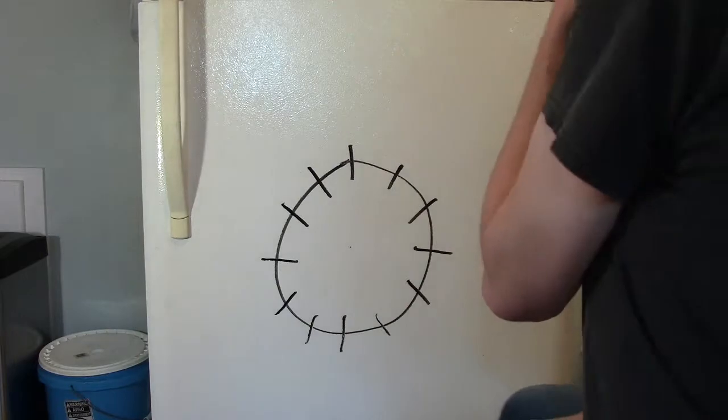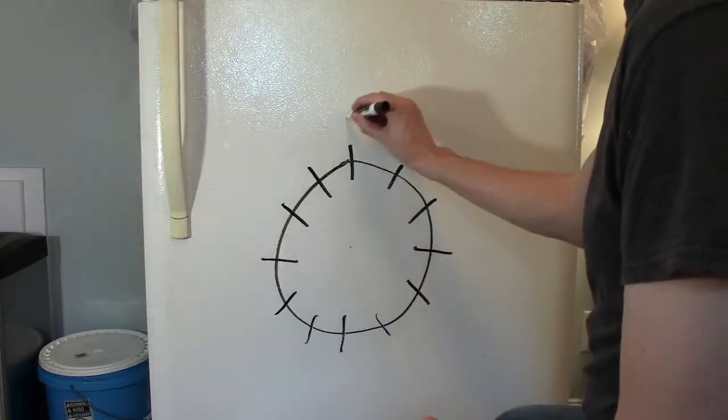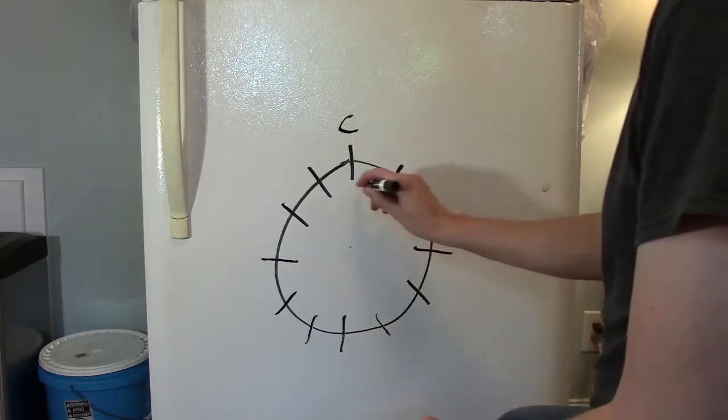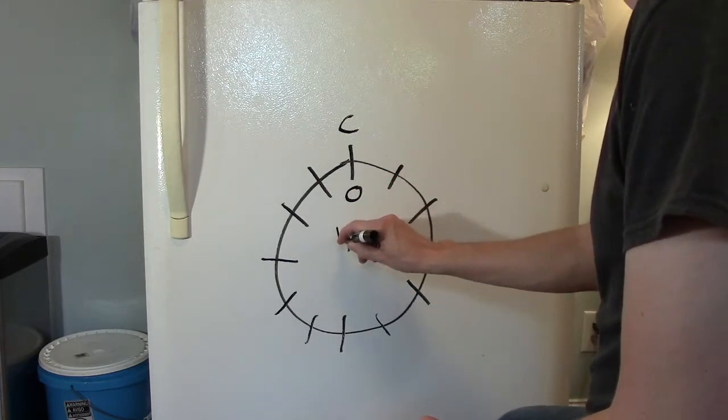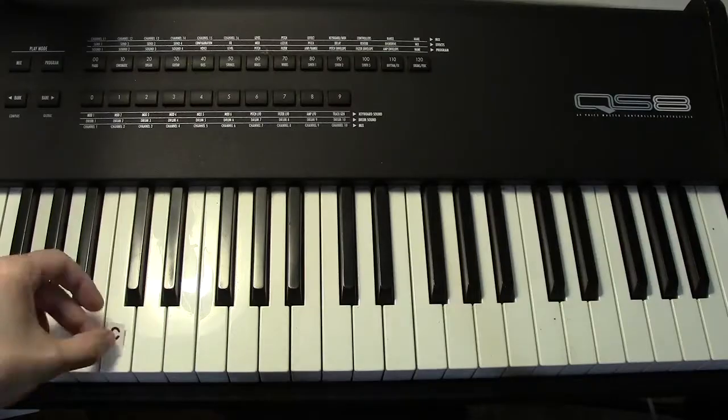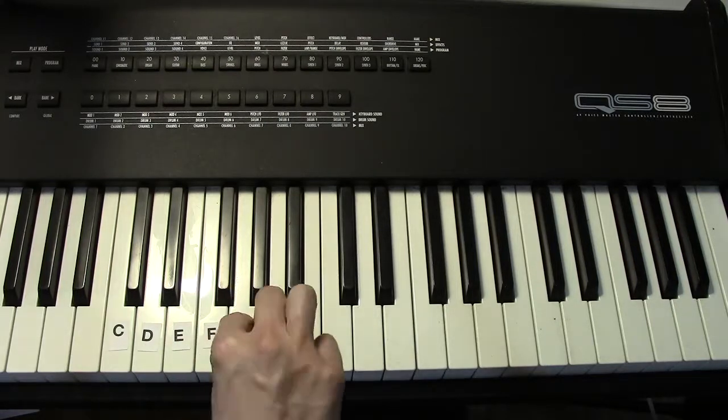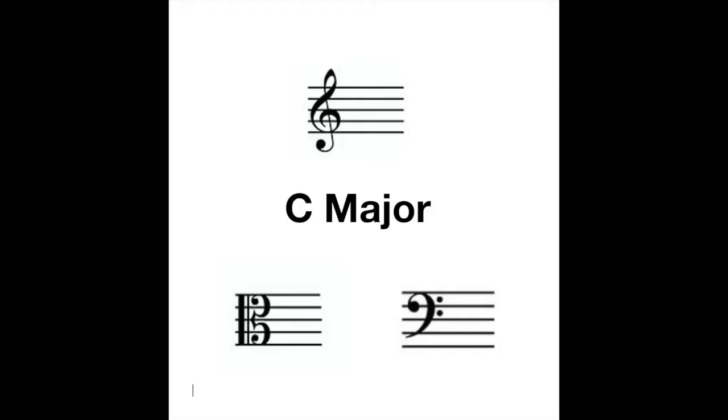Now start by asking yourself, what key has no sharps, no flats? That's right, C. C major has no sharps, no flats. On a keyboard, it is all the white keys starting from C up to the octave C.